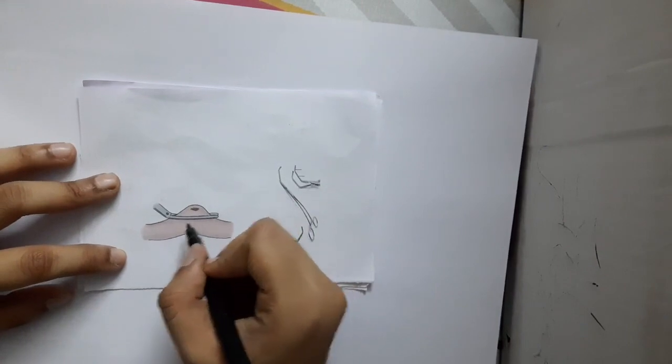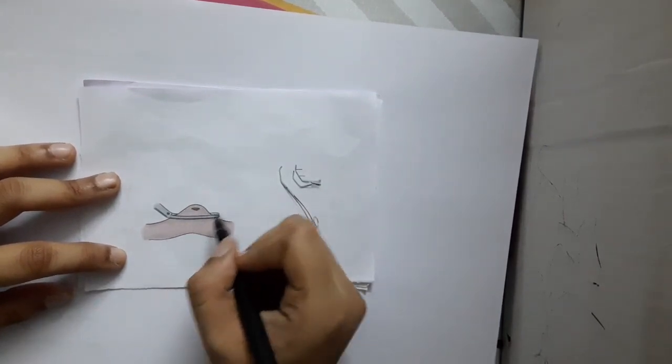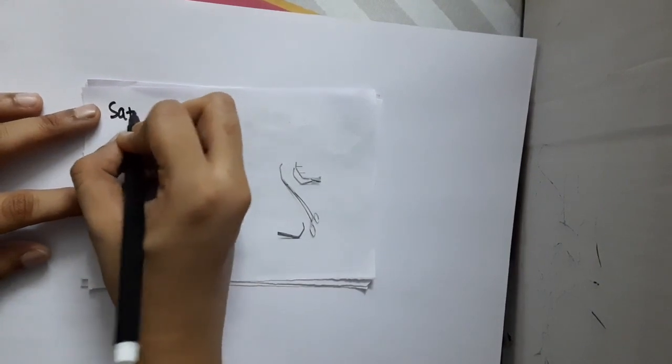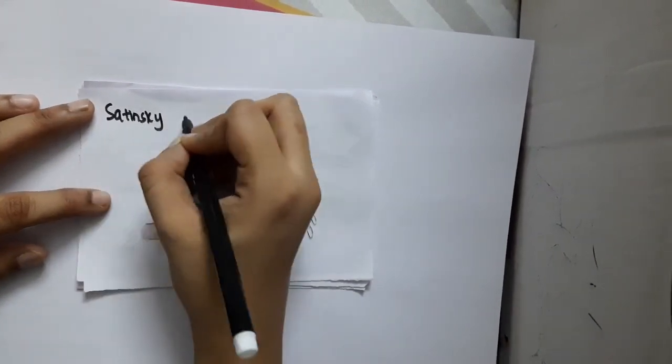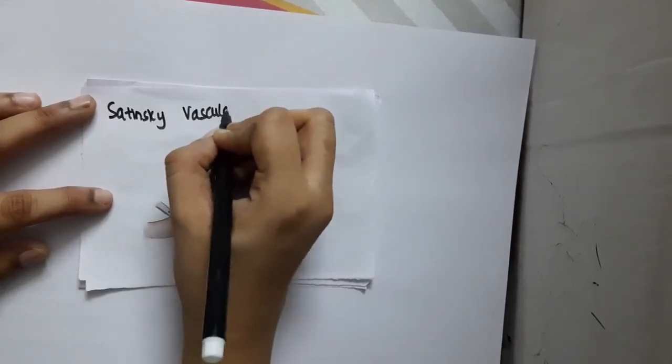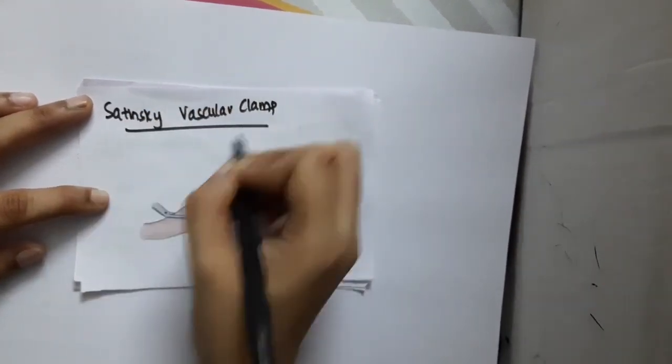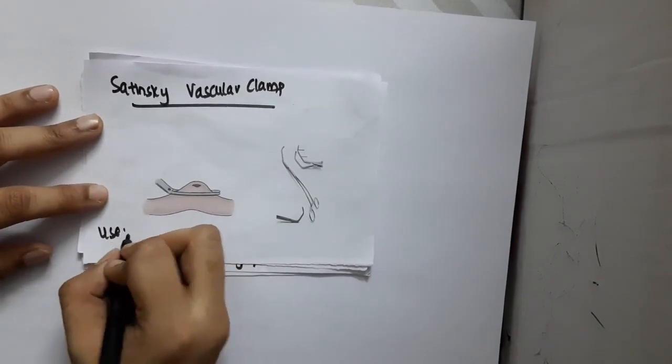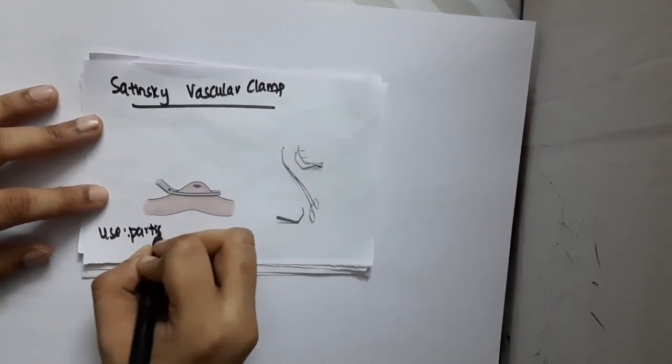This clamp is used like this. This is actually a Satinsky clamp, a Satinsky vascular clamp. What is the use of it? It is mainly used to partially occlude vessels.